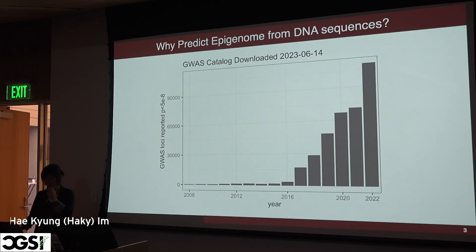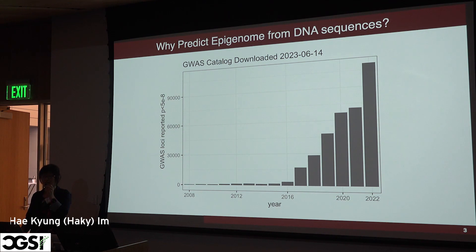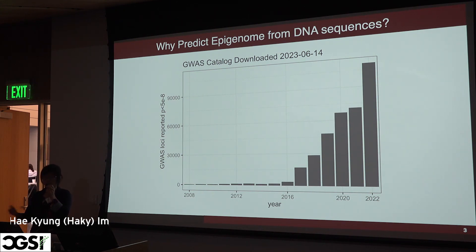Why predict the epigenome from DNA sequences? I'm interested in doing that because I want to learn about disease biology. We use GWASs, like many of you here. Over the last two decades we as a field have been running many GWASs and discovering more and more loci robustly associated with a myriad of complex traits, but the mechanism is still not known. Most of these variants are non-coding, so we don't really know, for the majority of them, what the causal genes are.